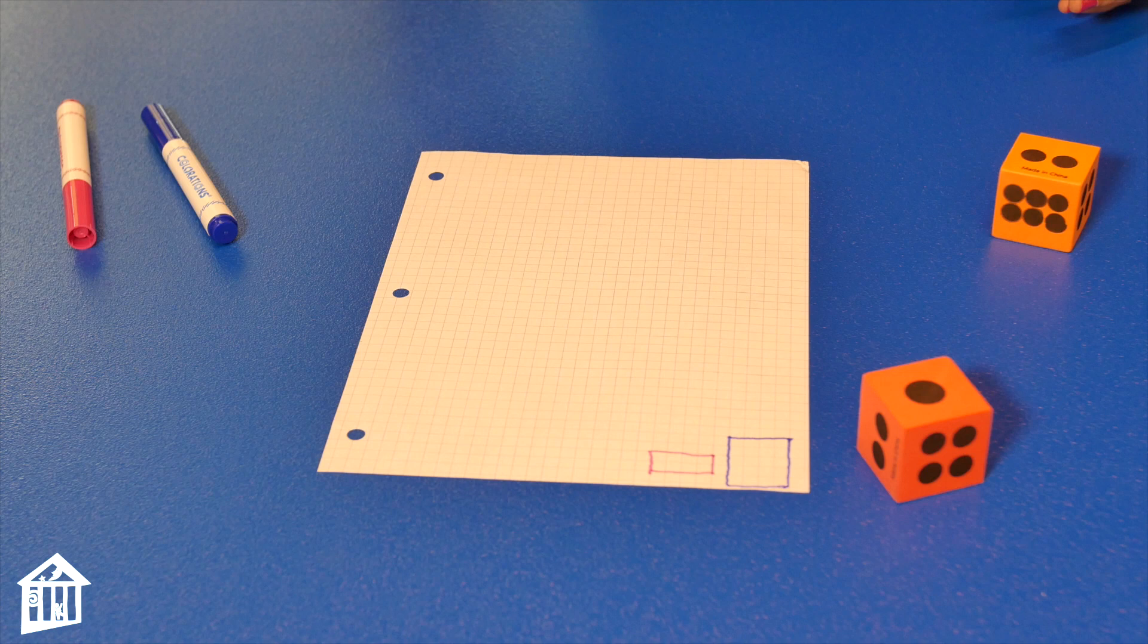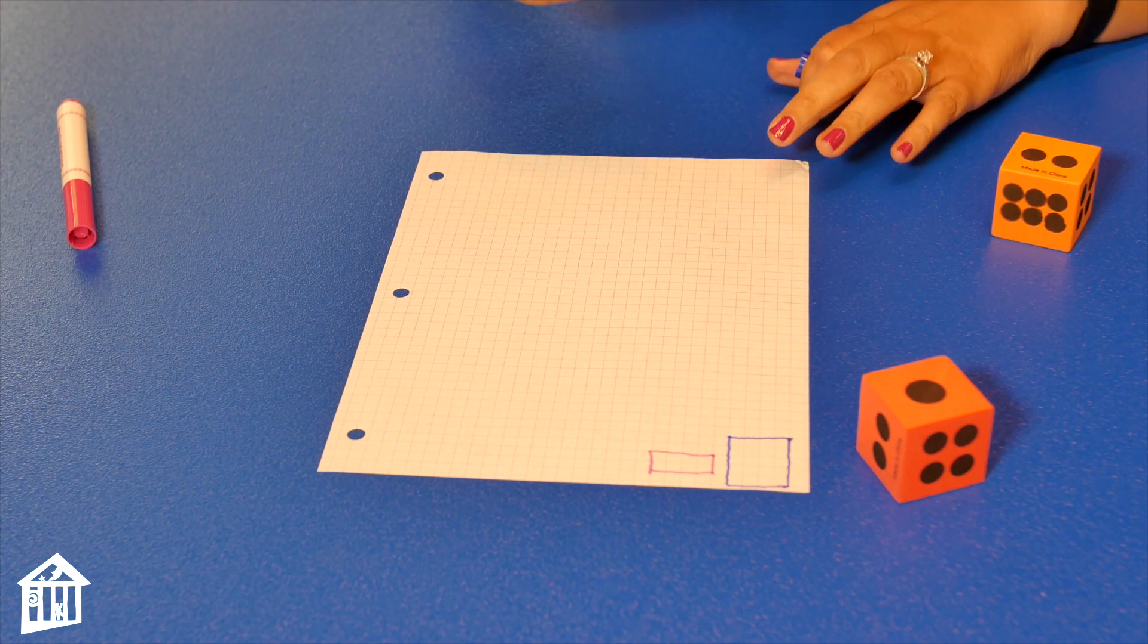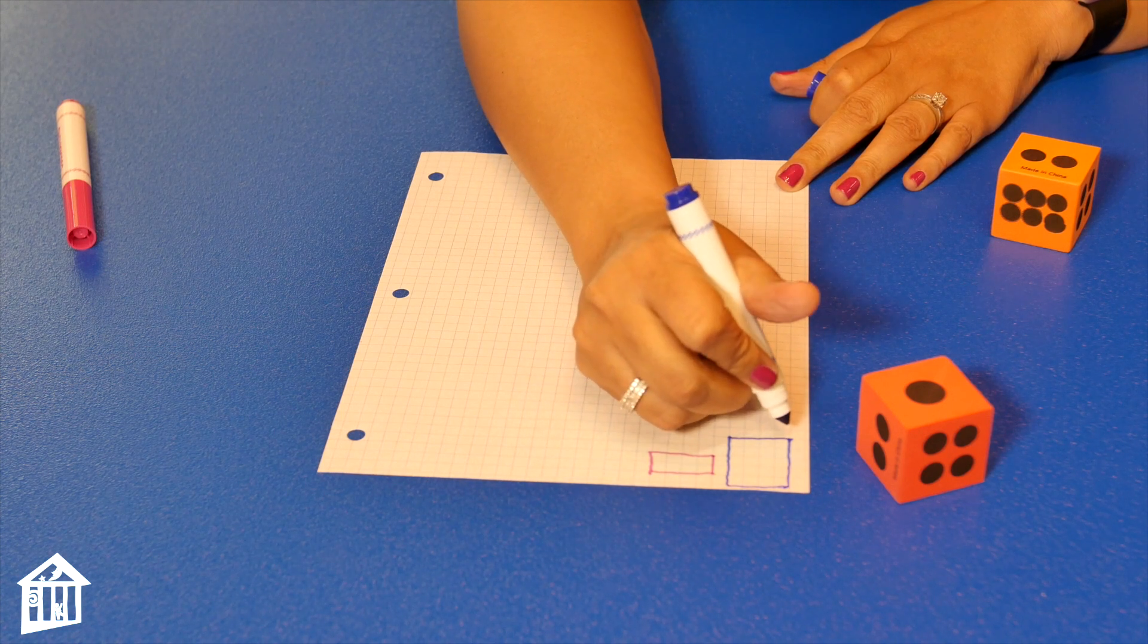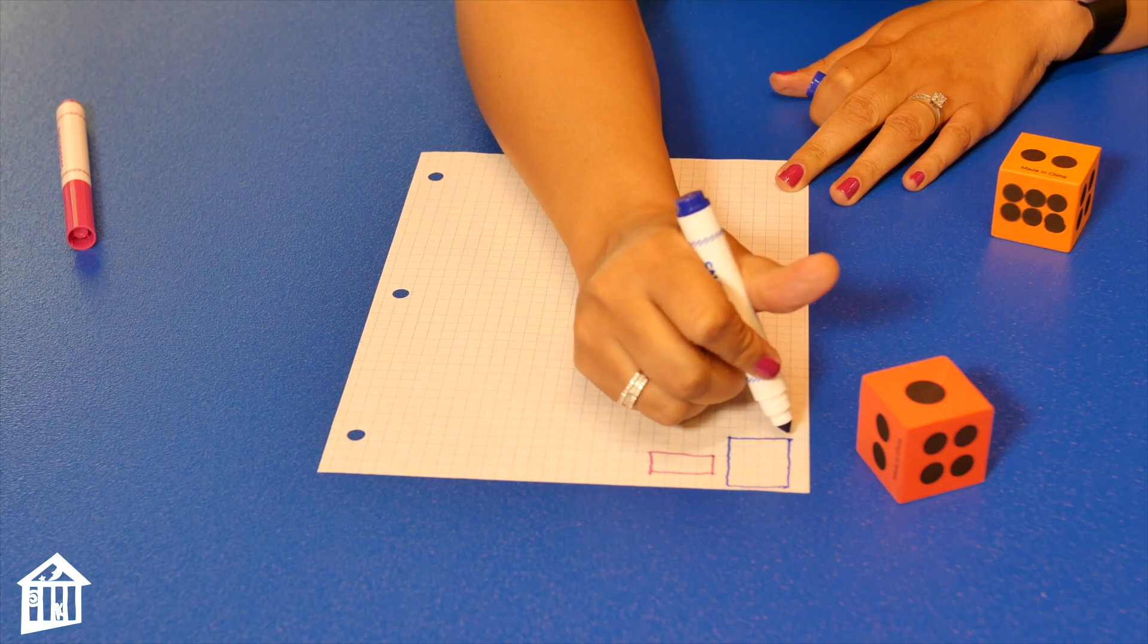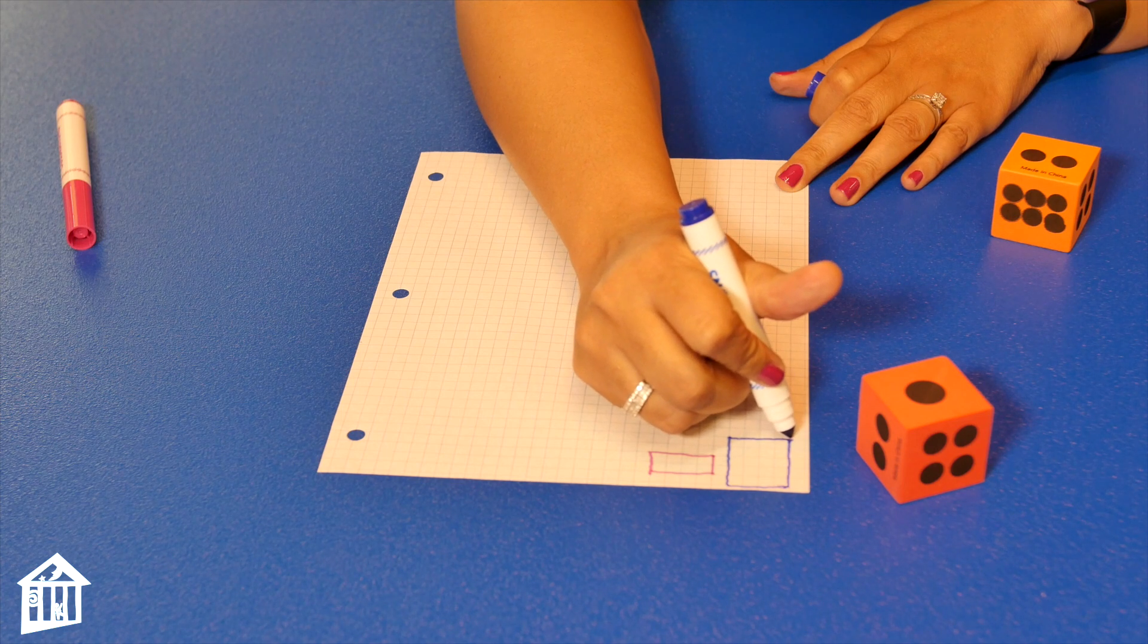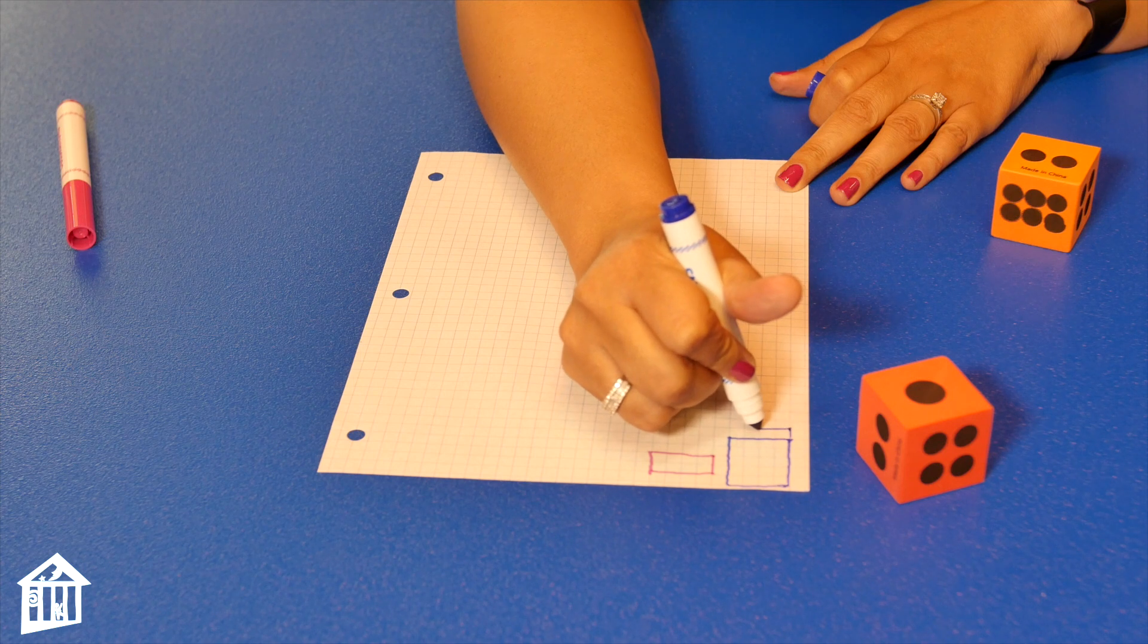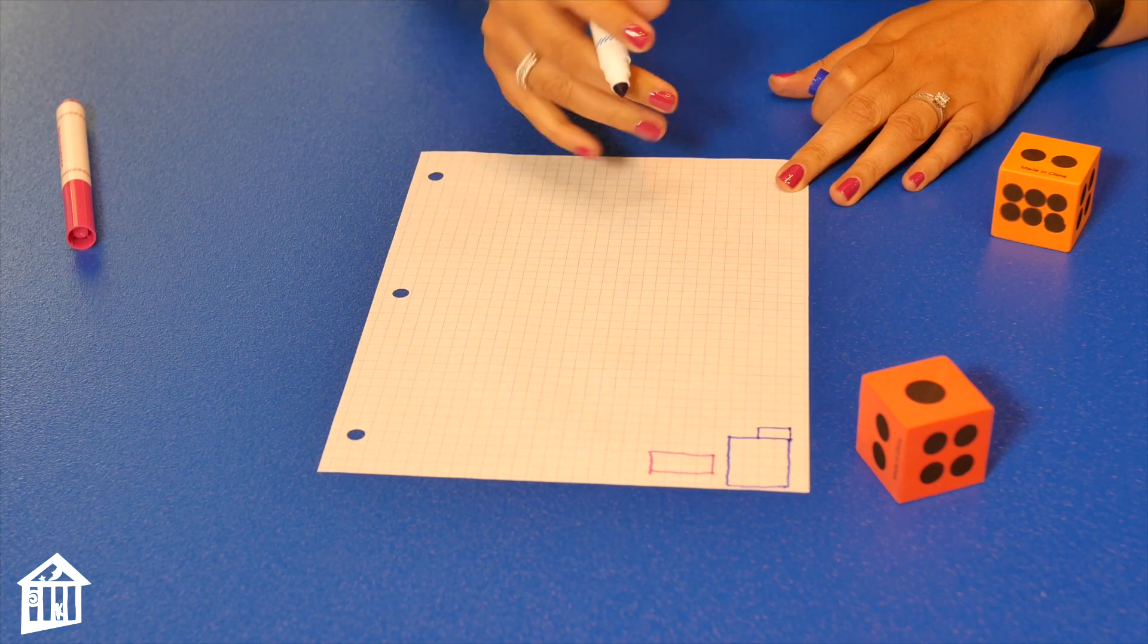First player's turn. All right. One group of two. So, since I'm trying to get the most, I'm going to connect to what I already have. One group of one, two. So that's my one group of two.